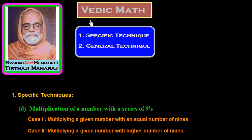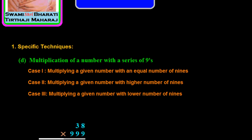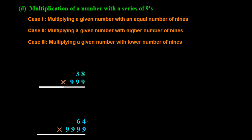Hi friends, in this session of Vedic Mathematics we study specific techniques — specifically multiplication of a number with a series of 9s. In the last session we studied Case 1: multiplying a given number with an equal number of 9s. In this session we study multiplying a given number with a higher number of 9s.